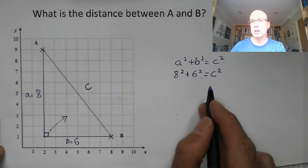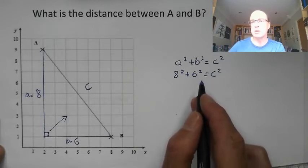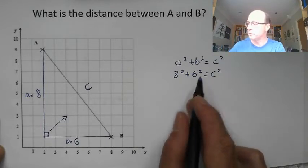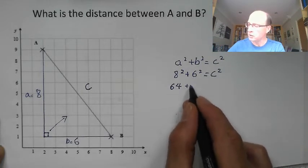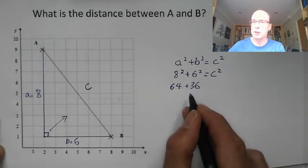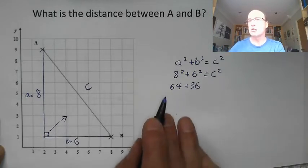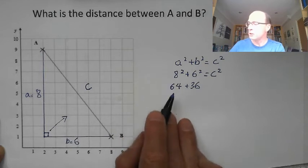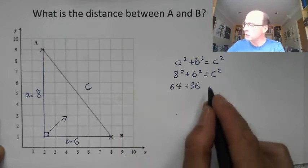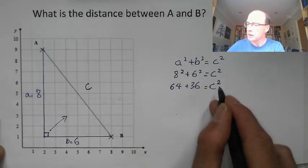Always write these steps down. So remember you're picking up method marks as you go through, you're much less likely to make mistakes as you're getting your working out down on paper. So 8² is 64, 6² is 36, if you can't remember you can always use your calculator. But some of those square numbers of single digits we should know. So 8² is 64, 6² is 36, and that's going to equal c².